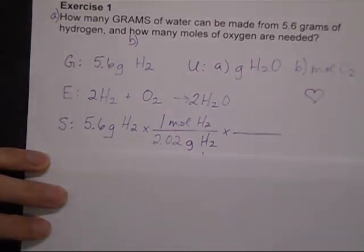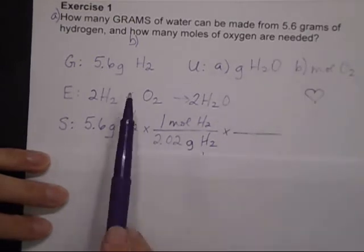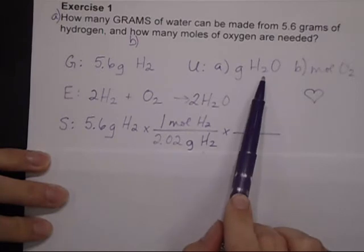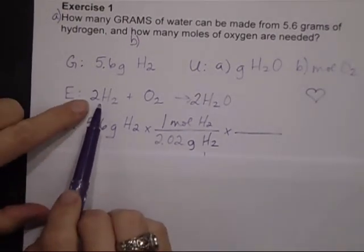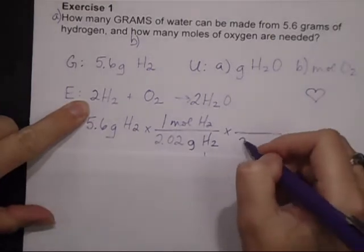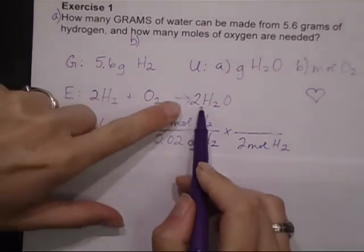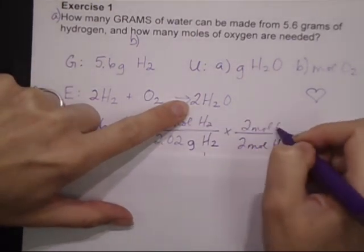The next thing I need to consider is, now I'm into moles, now I can switch from the chemical I'm starting with, hydrogen, to the chemical I'm looking for, water. So I'm going to go into my equation, and I see that I have two moles of hydrogen to begin with, and then I'm looking for water, that's also two moles.